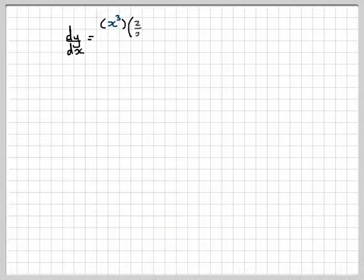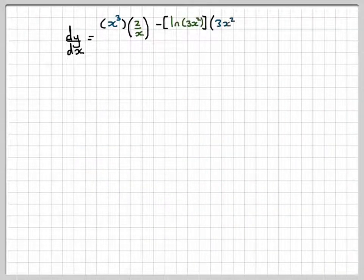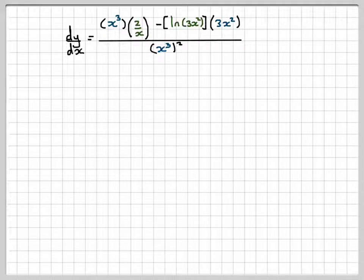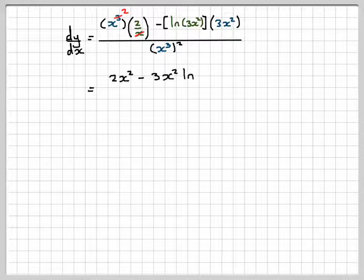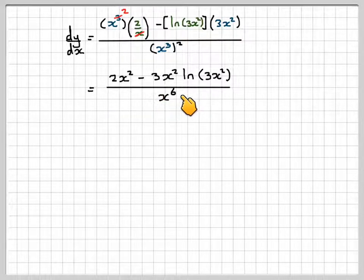Write that out again. Now it matters for our powers of algebra that x and x cubed will cancel, so the x will go and we'll be left with x squared. So we've got 2x squared minus 3x squared ln of 3x squared